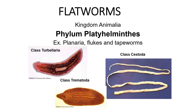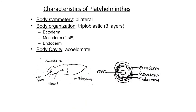Phylum Platyhelminthes is very vast. It has three classes: Turbellaria, Trematoda, and Cestoda. Turbellaria mein aate hain aapke Planaria. Class Trematoda mein aate hain flukes, aur tapeworms aate hain aapke class Cestoda mein. Teen classes pai jaati hain.